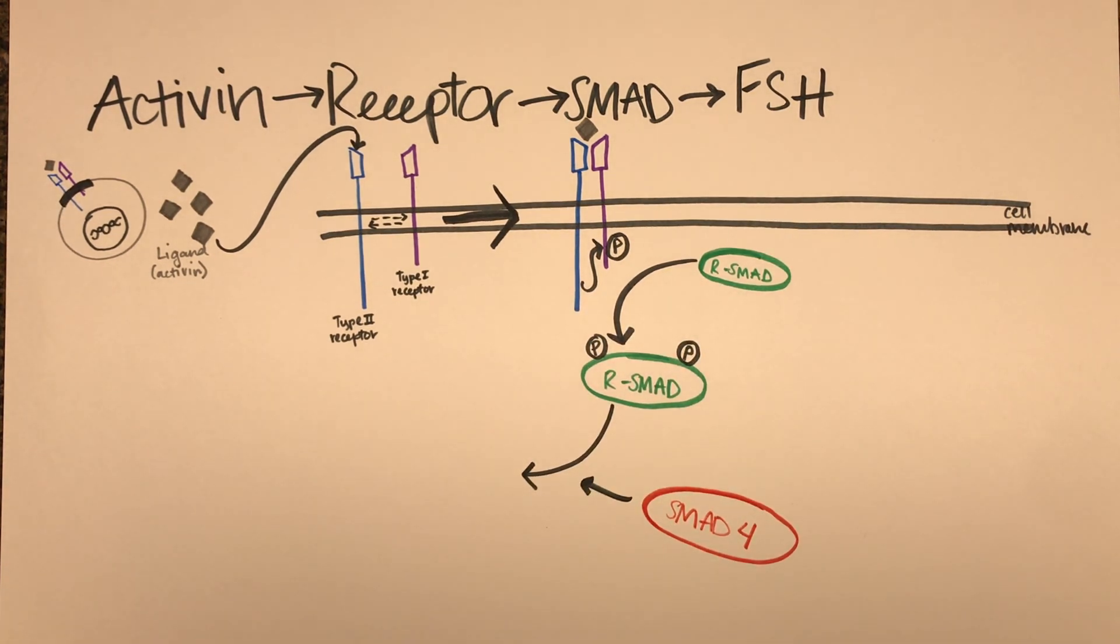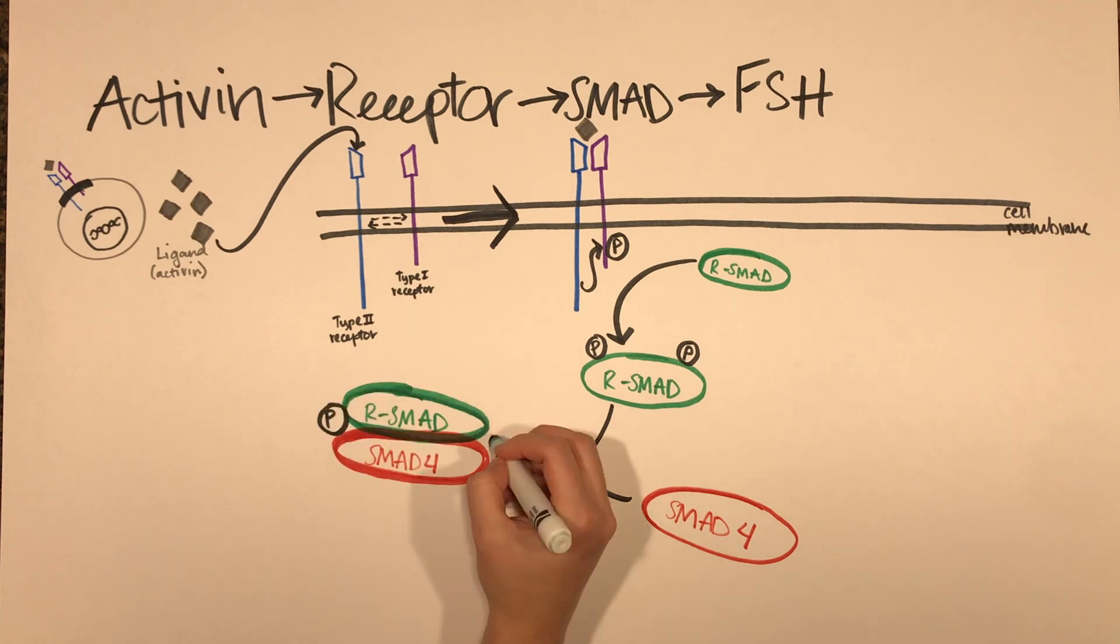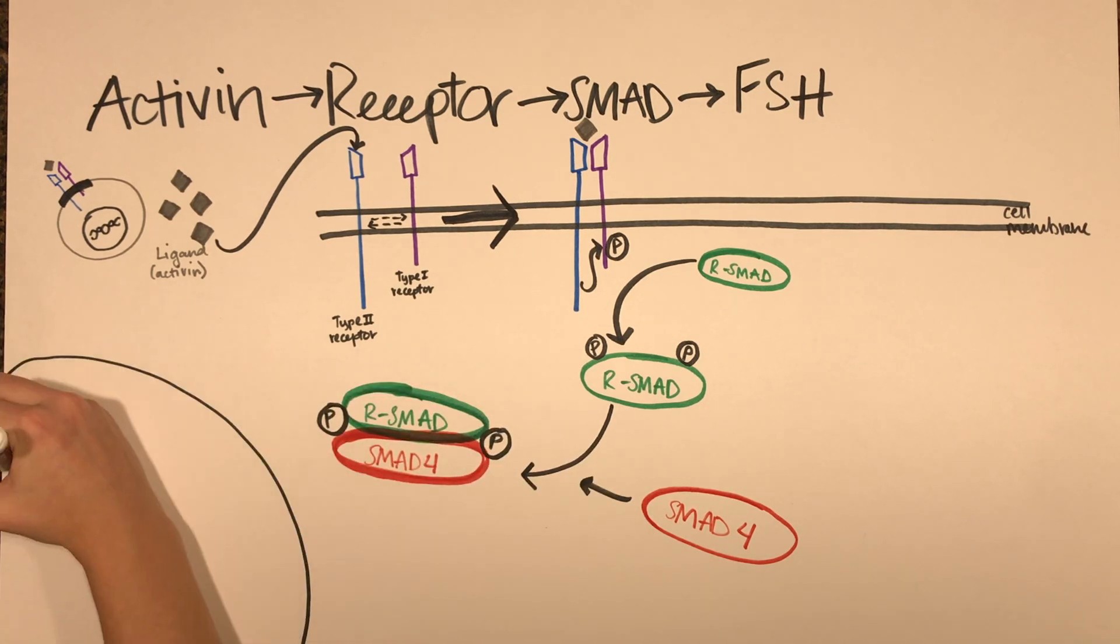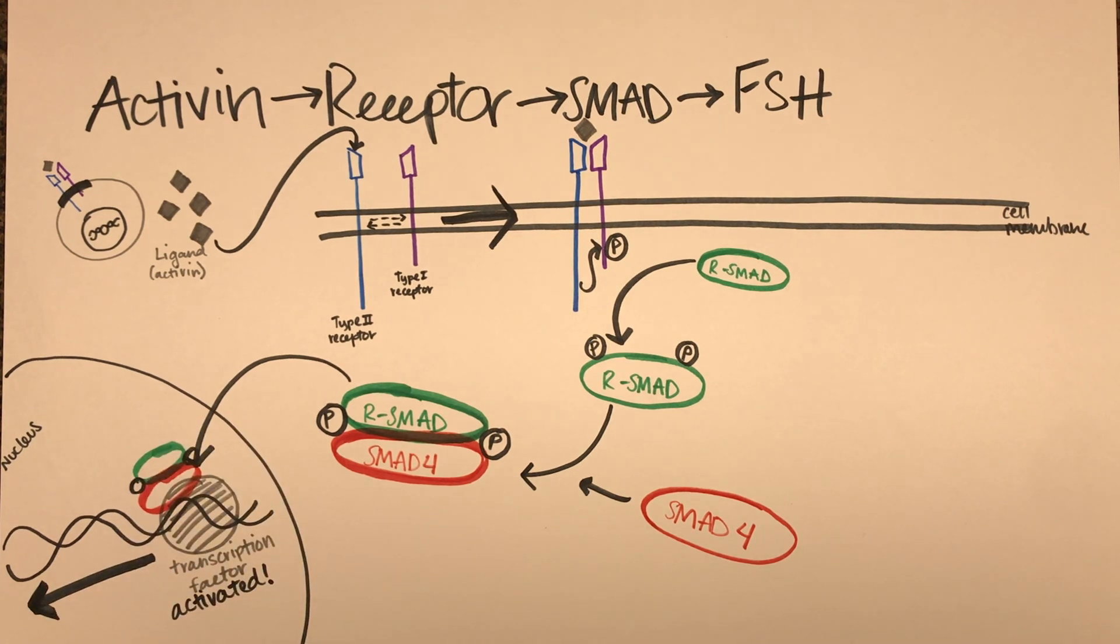Once phosphorylated, RSMAD recruits another SMAD protein called SMAD4 to form a heteromeric complex within the cytoplasm of the cell. This heteromeric complex then translocates to the nucleus of the cell where it can control gene expression by activating transcription factors. Once activated, these transcription factors are going to promote FSH release in the anterior pituitary.